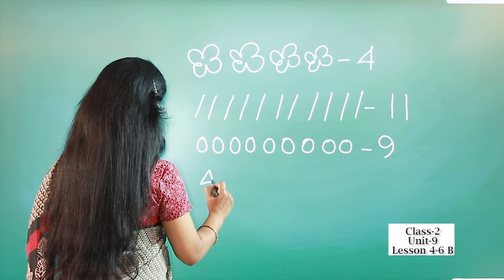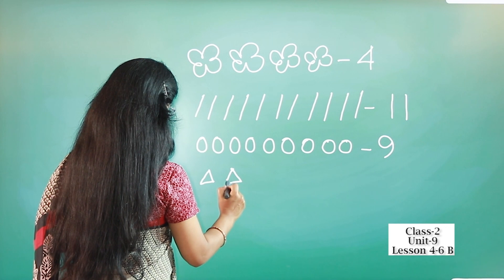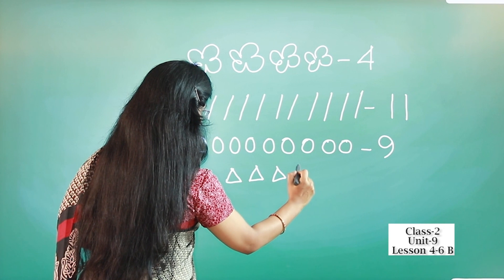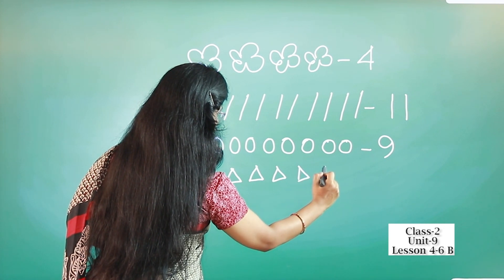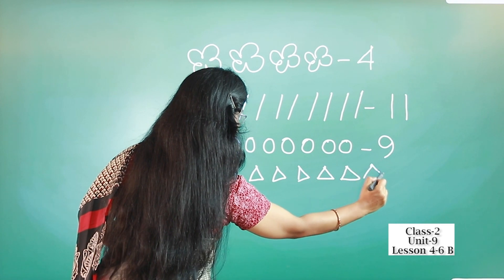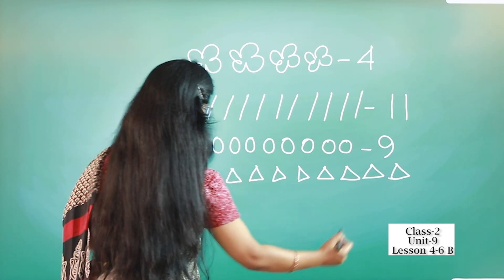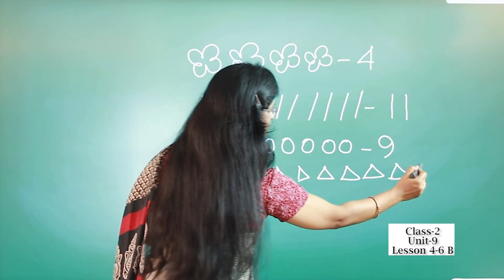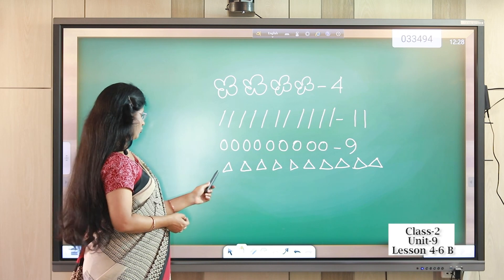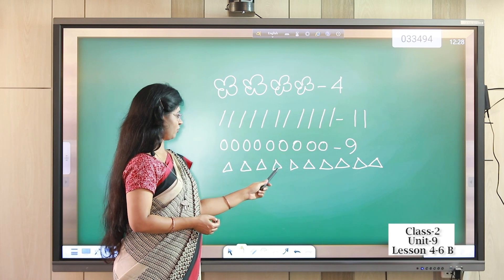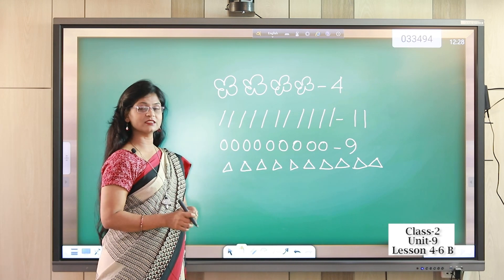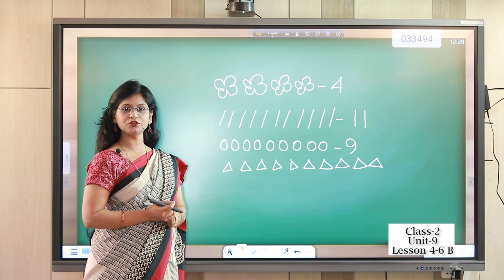Now I'm going to draw some triangles. How many triangles are there? One, two, three, four, five, six, seven, eight, nine, ten — ten triangles. You have to write 10 in your notebook.